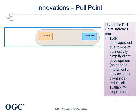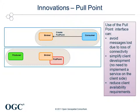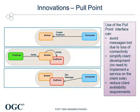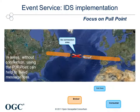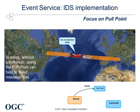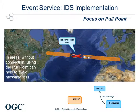Another innovation is the establishment of a pool-based communication solution for clients. This approach is based on the same eventing architecture, except that the dissemination method of matching events is changed to a request-based solution. It helps to avoid message loss, as the client can manage the reception of matching events by itself. The IDS implementation focused on establishing this pull-point interface, where the event service provides an interface for clients to request all matching events that have been deposited previously.